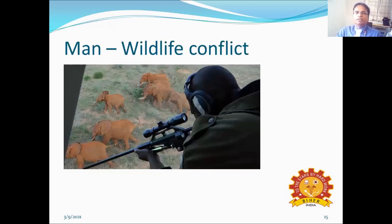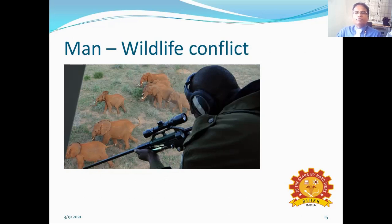Man-wildlife conflict occurs when man occupies forest land. The animals which normally live in the forest areas lose the resources required for them. When their needs are not fulfilled, they naturally move to nearby places, and man-wildlife conflict starts. When man hunts or kills the animals, this conflict continues and extinctions take place.